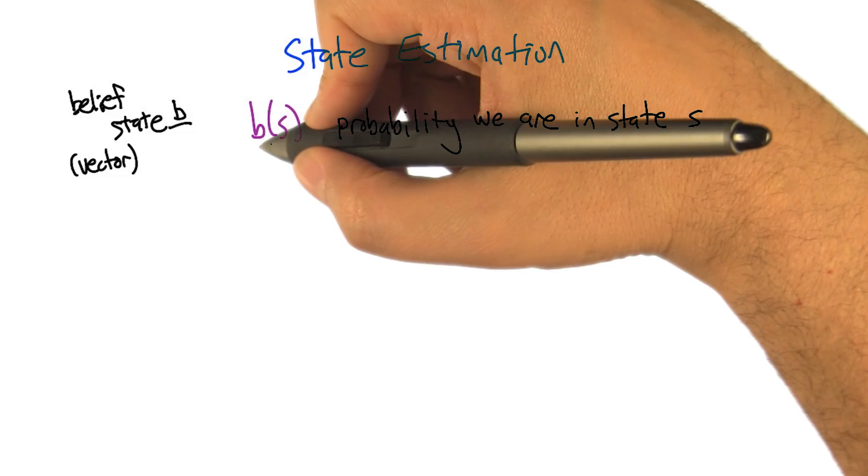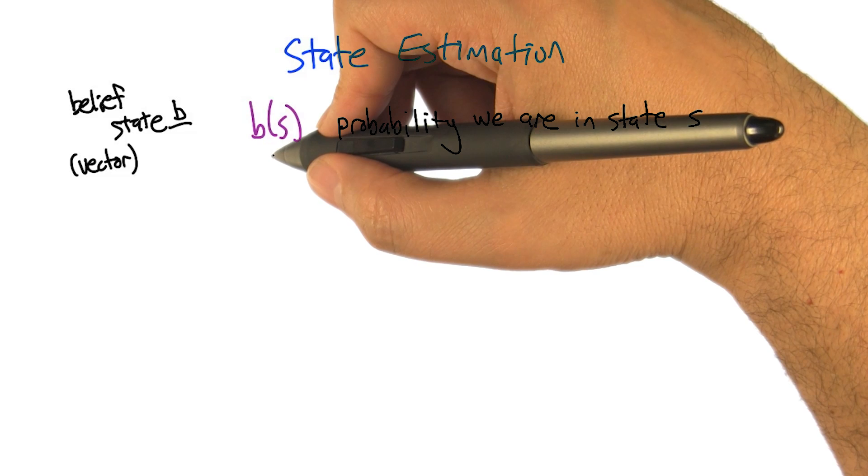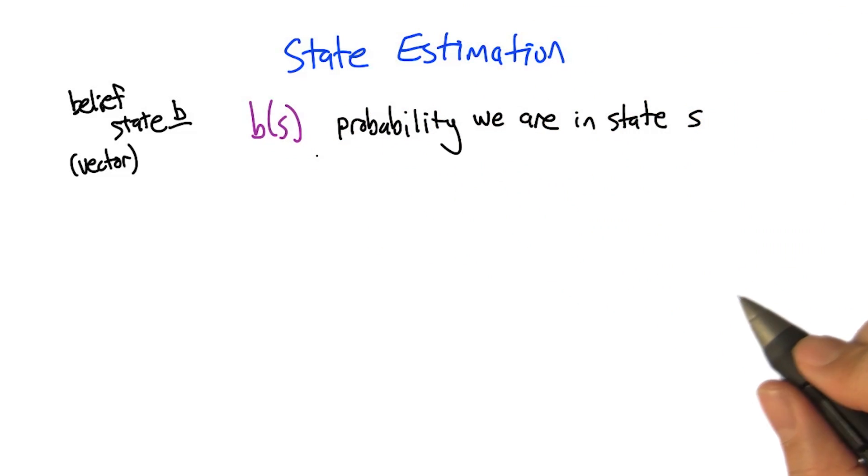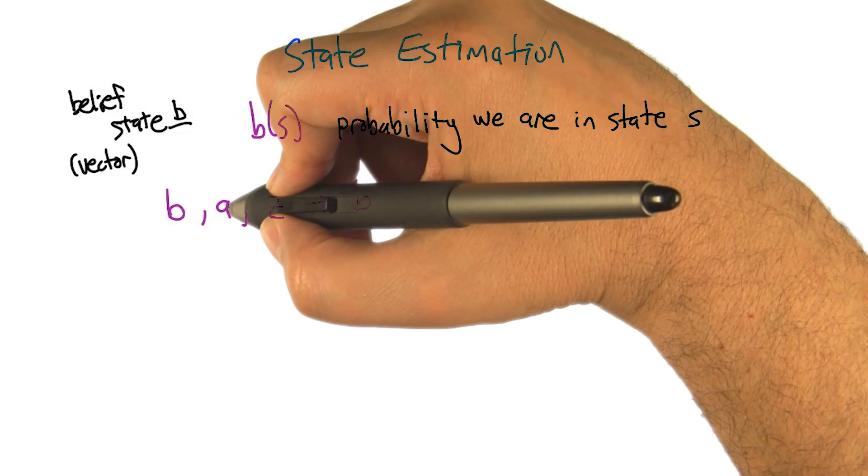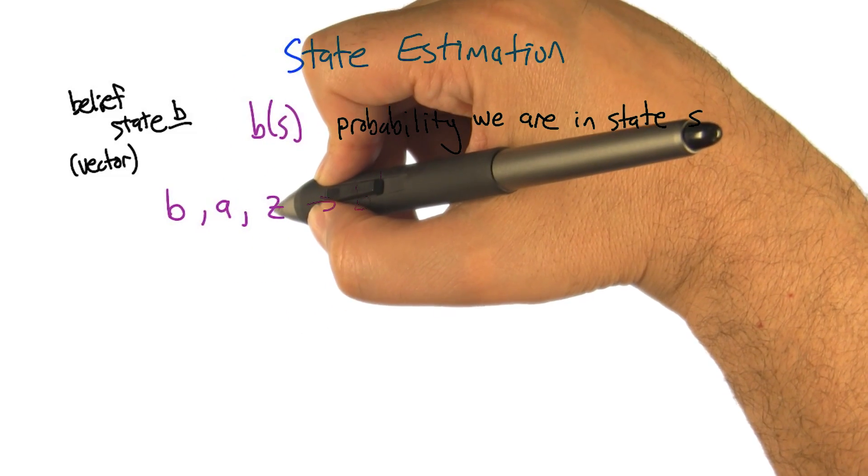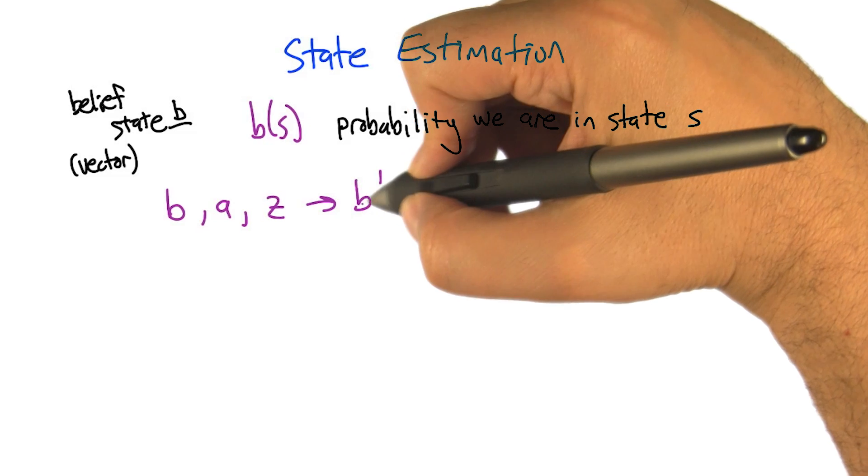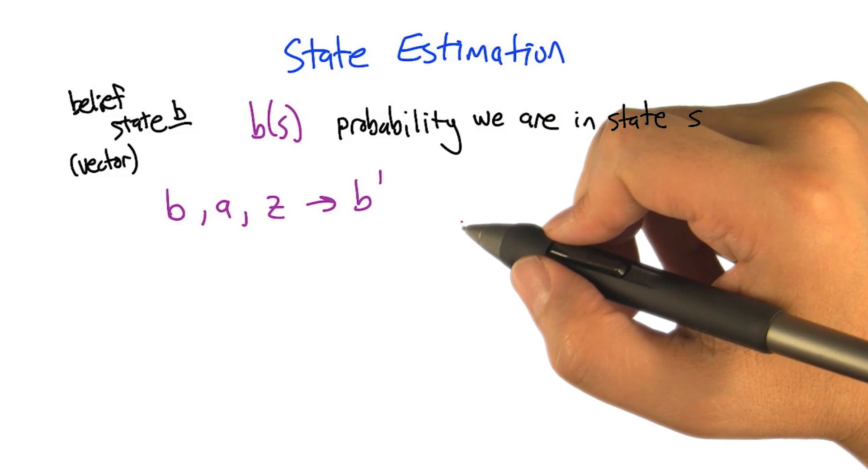So now what we need to do is figure out how this belief state gets updated as we take actions in the world. So the way that we're going to think about that is, we're in some belief state, we choose an action, the world gives us back an observation, and we need now a new belief state to be formed from that.